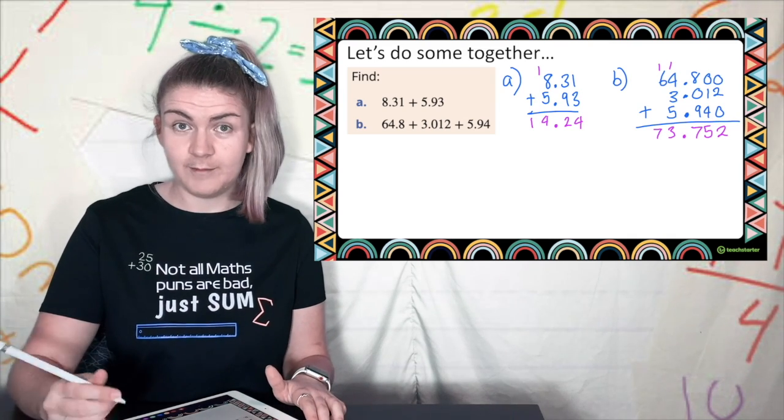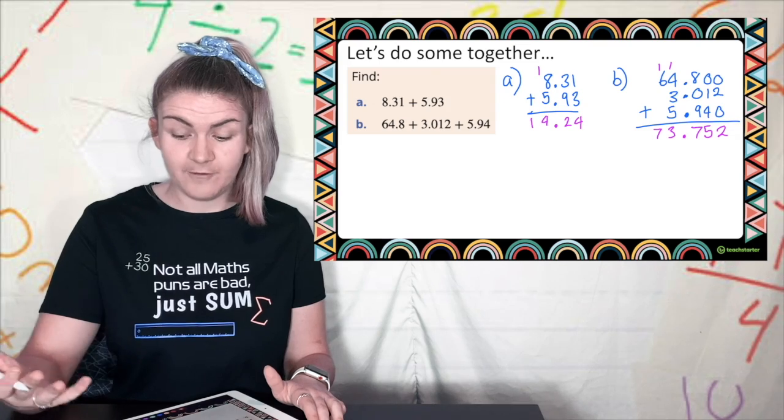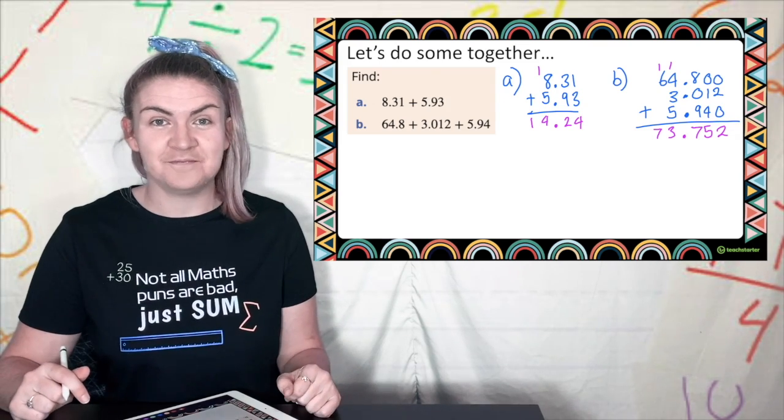Well I've got 63 plus 4 would be 67. Plus 5 would be 72. This is about 73. So that's perfect.